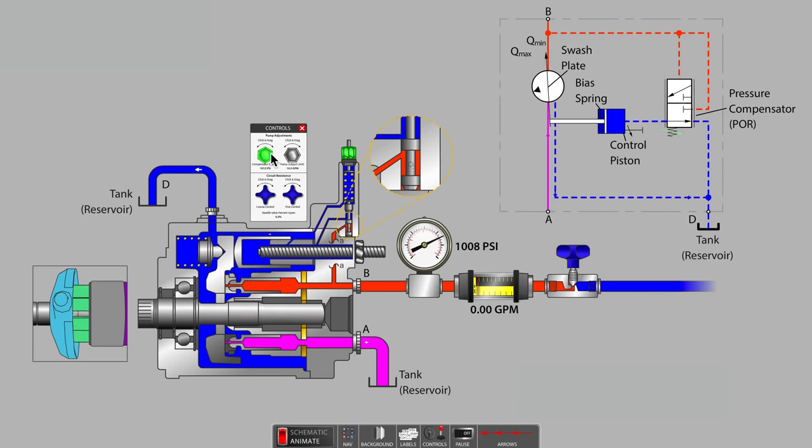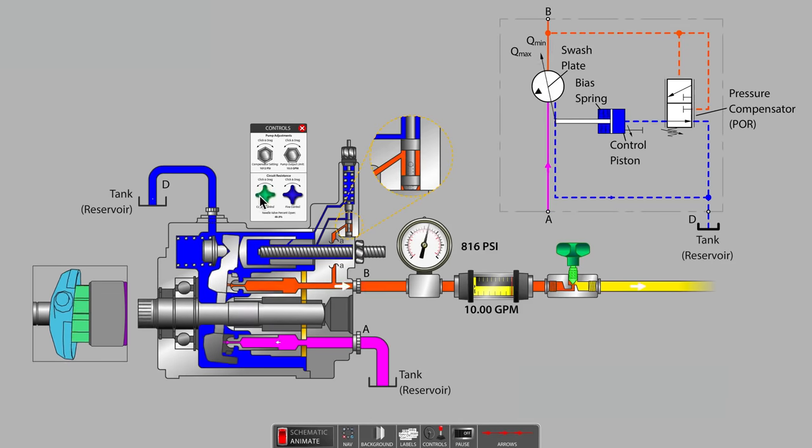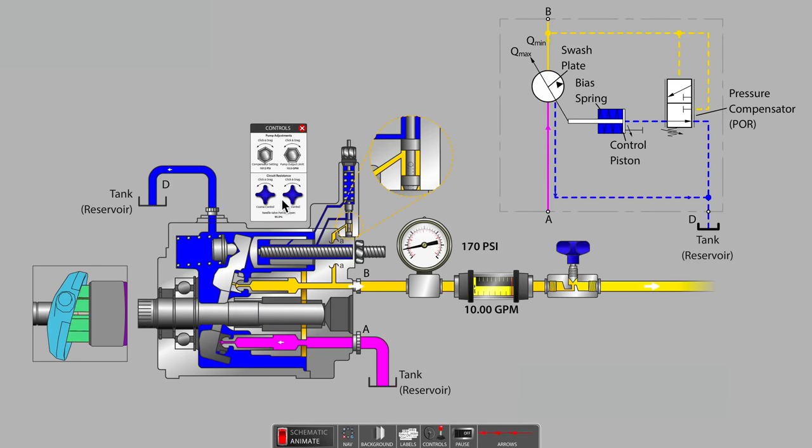When we open the needle valve, pressure will fall and the pump will return to maximum displacement due to the force of the bias spring. That is the meaning of the bias spring. The bias spring means that the pump has a tendency to produce maximum flow whenever possible.